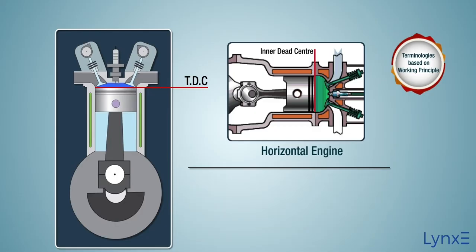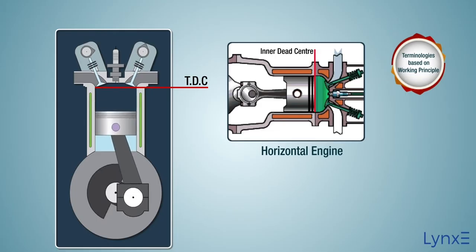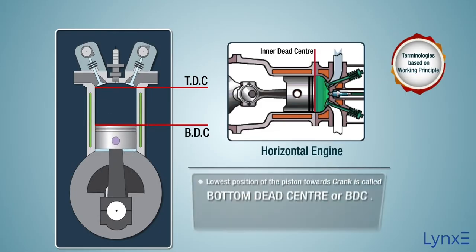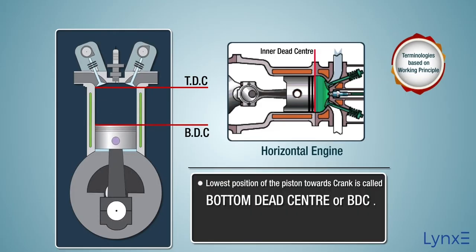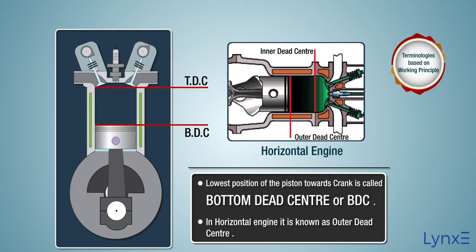The lowest position towards the crank end of the cylinder is called bottom dead center, or BDC. In a horizontal engine, it is known as outer dead center.